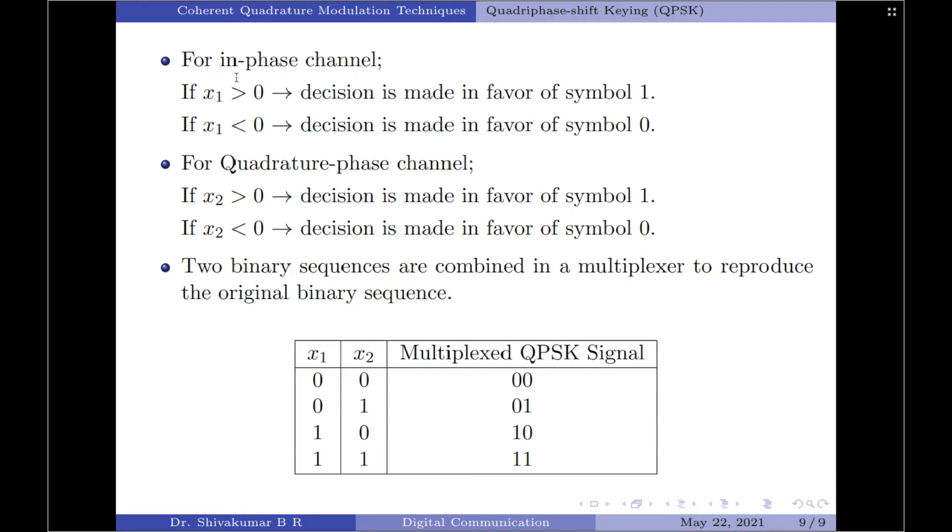For in-phase channel, which is the upper path, if the coefficient X1 is greater than 0, then a decision is made in favor of symbol 1. On the other hand, if the coefficient X1 is less than 0, then a decision is made in favor of symbol 0.